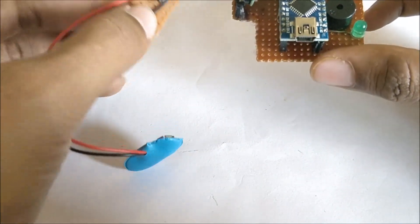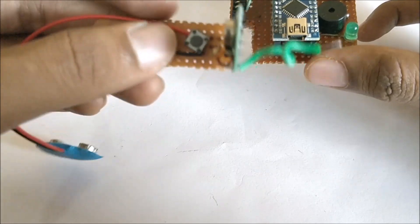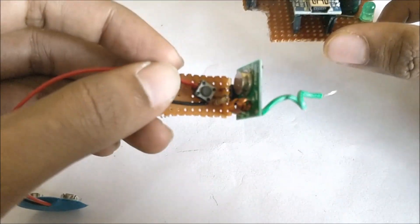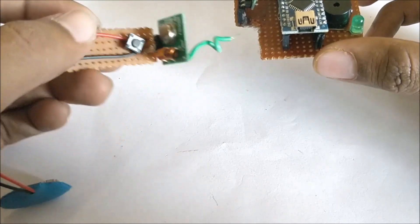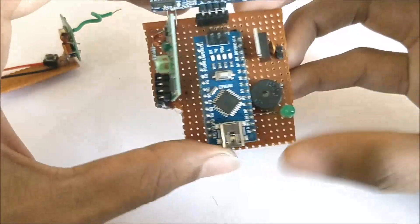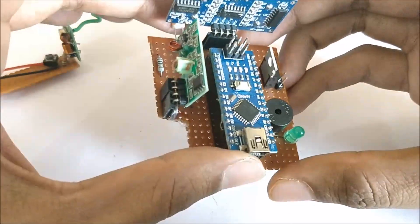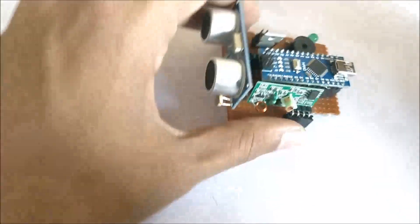As you can see, this transmitter is very small. The blind man can easily carry it in his pocket. If he loses his stick or wants to know where his stick is, he can just press this button and the buzzer will start beeping to guide him to the stick.